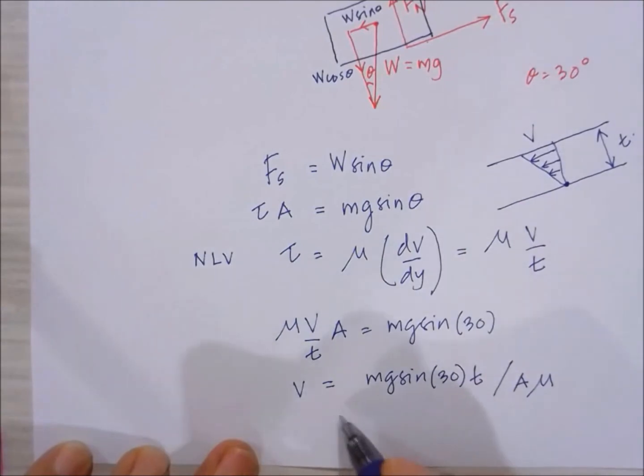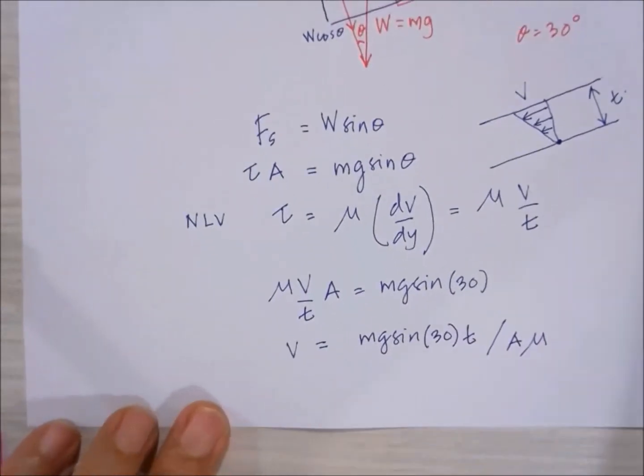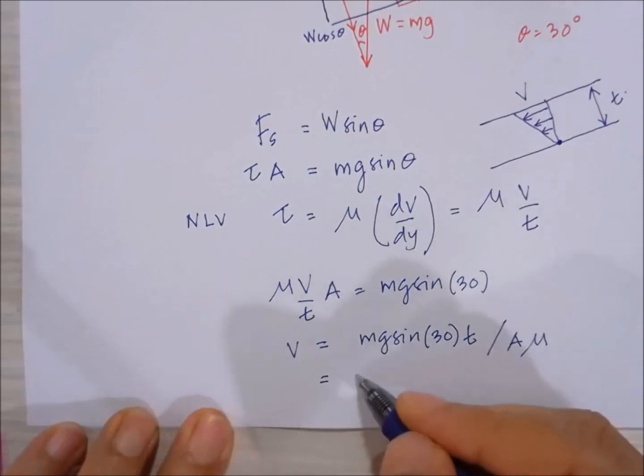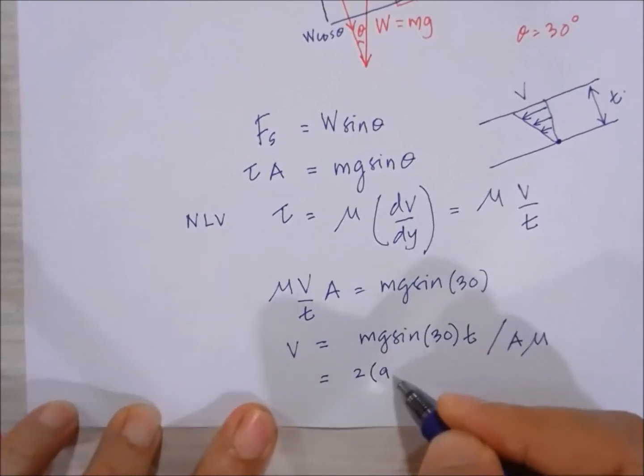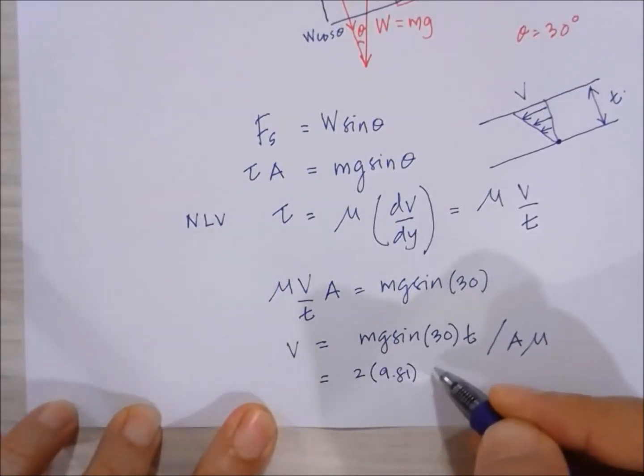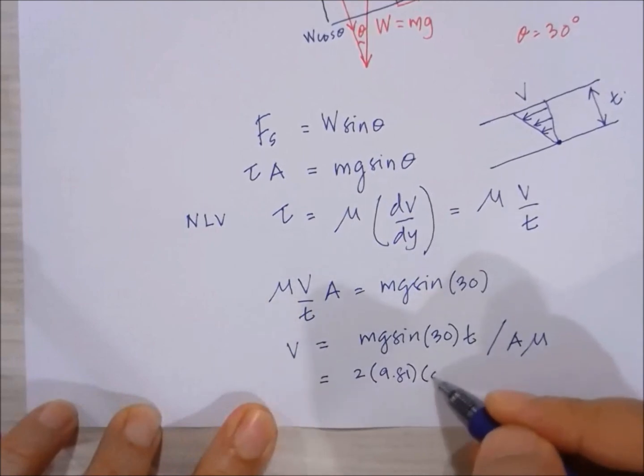So if we substitute the values, then we have this equal to 2 times 9.81 sin theta equals 0.5.